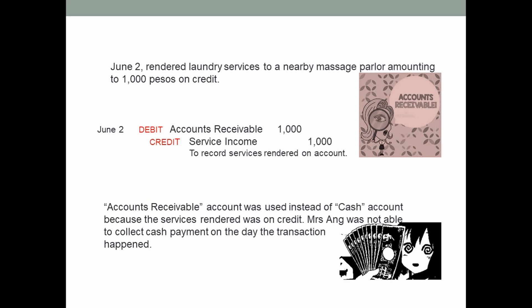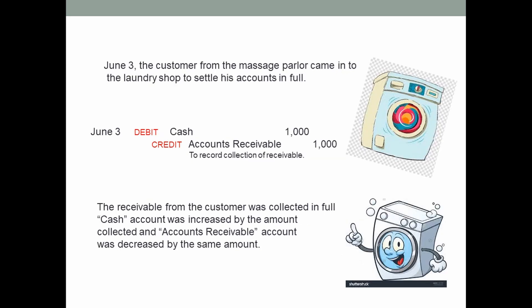On June 3, the customer from the massage parlor came into the laundry shop to settle his account in full. You have to debit cash 1,000 and credit accounts receivable 1,000 to record collection of receivable. The receivable was collected in full — cash account was increased and accounts receivable was decreased by the same amount.